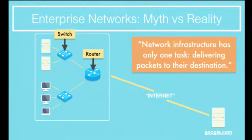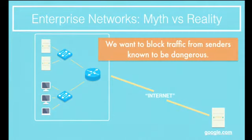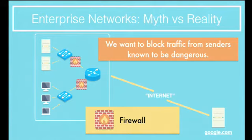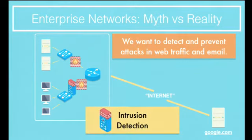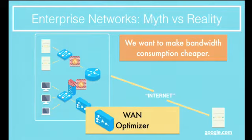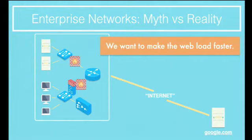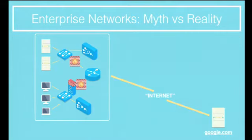Unfortunately, this is a very oversimplified picture of networks — so oversimplified that I call it a myth. It's oversimplified because over time we've demanded that our networks do more and more. For example, we know that some senders on the internet are dangerous, and that's why we deploy firewalls to block them. We know what malicious traffic looks like and we want our networks to block it, hence we deploy intrusion detection systems. We know that network bandwidth consumption is expensive, so we deploy WAN optimizers to compress traffic. And we know that we can make web pages load faster by caching them closer to end hosts. I could go on and on.